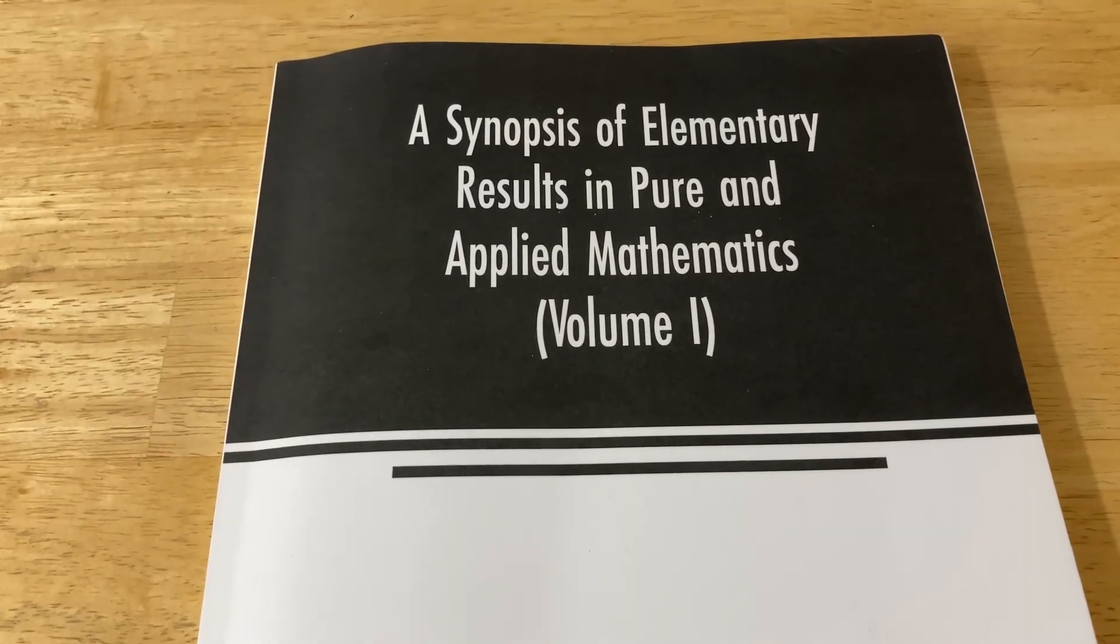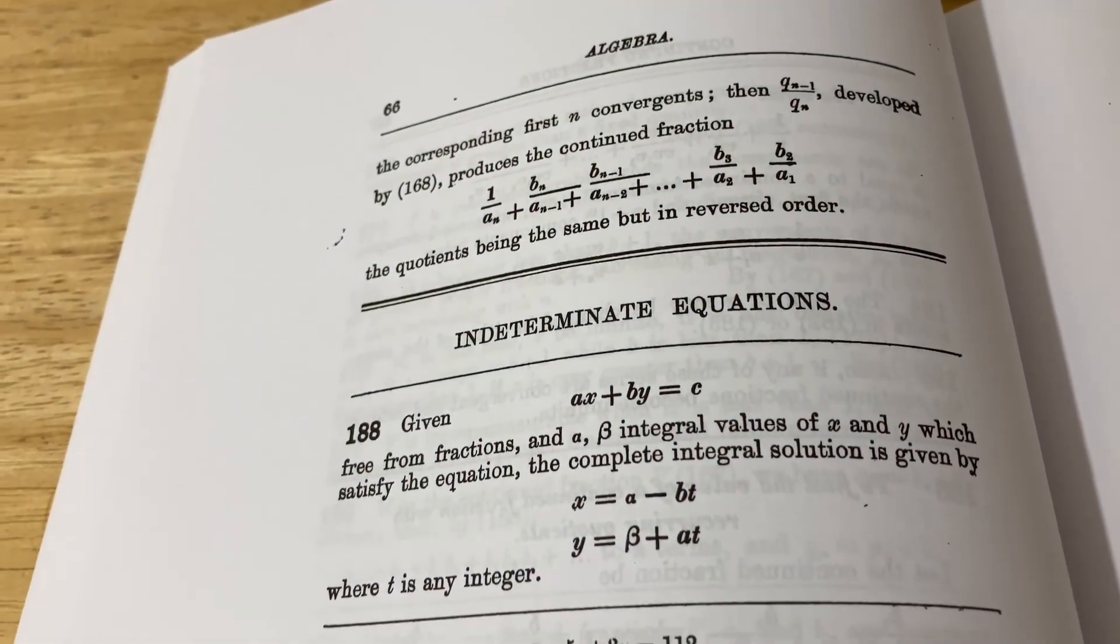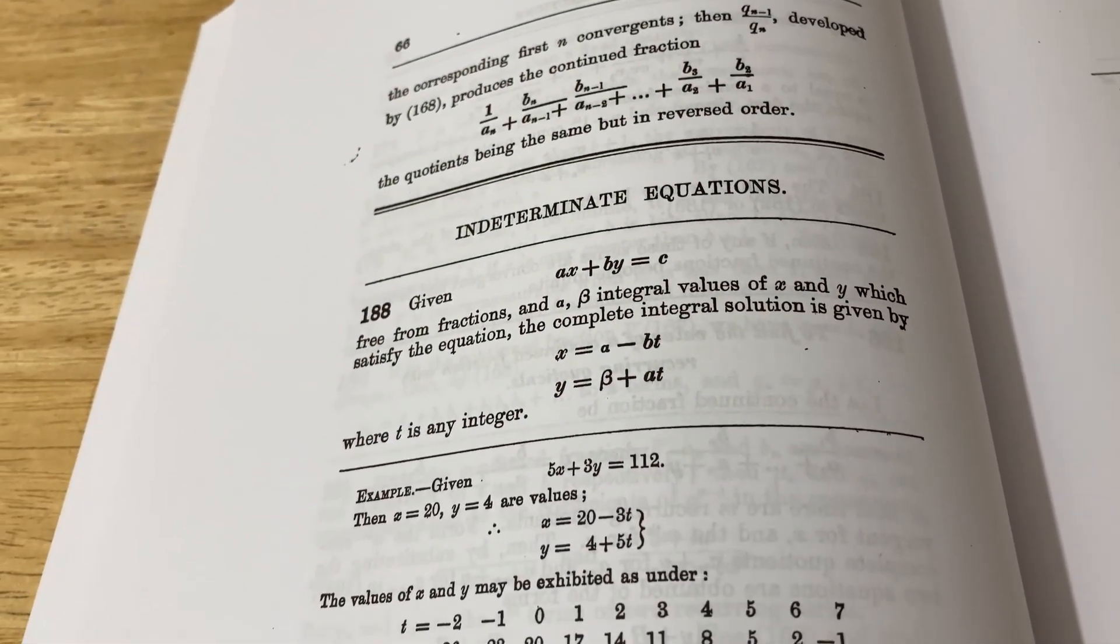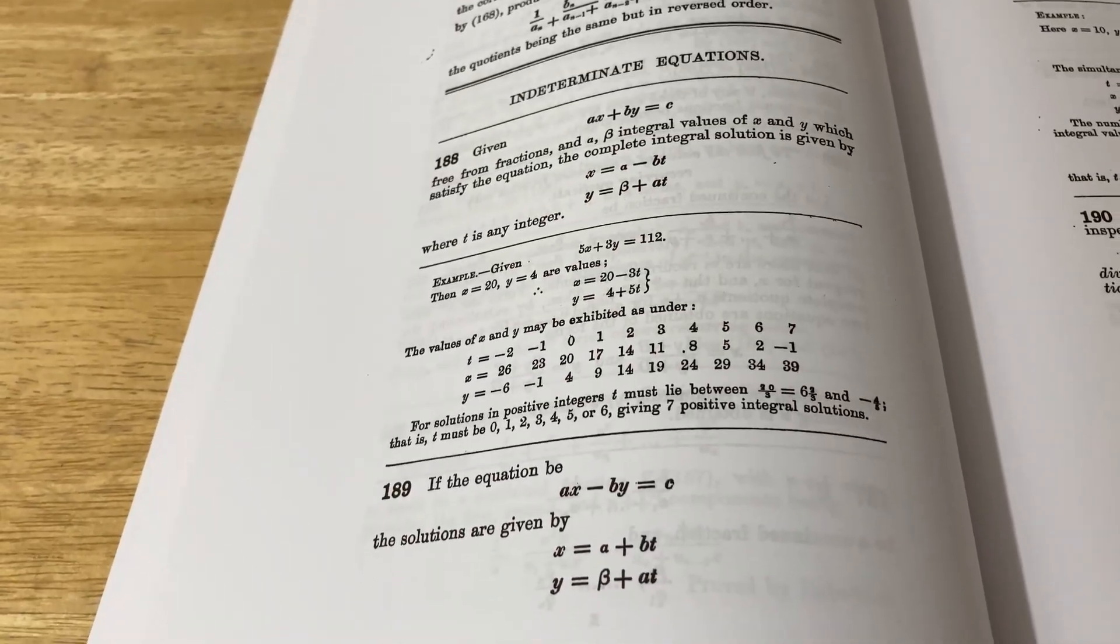His name was Ramanujan, and this is the book he used to learn mathematics. In this video, we're going to briefly talk about this book. I'm going to show you some of the math that's actually in this book, which I think is really cool.